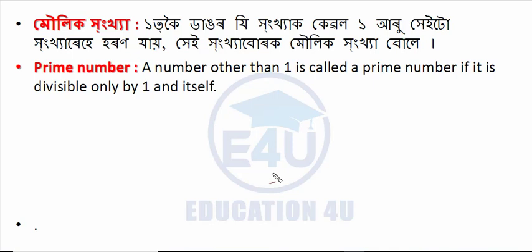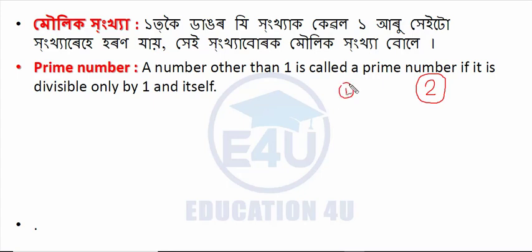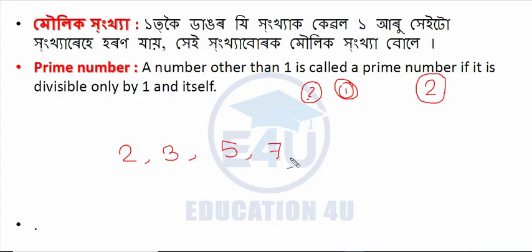A number other than 1 which is divisible only by 1 and itself is called a prime number. Examples of prime numbers are 2, 3, 5, 7.